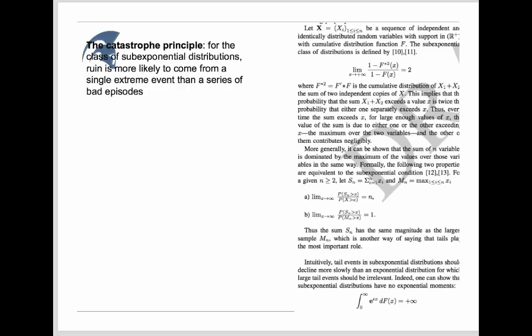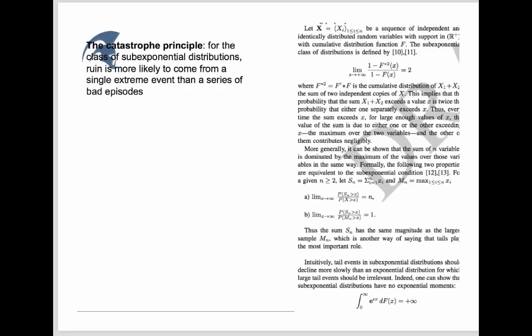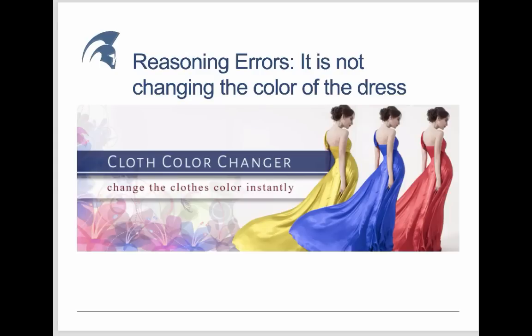So we start with the catastrophe principle. For the class of sub-exponential distribution, which is pretty much sub-exponential as a demarcation between thin tail and fat tail, for that class ruin is much more likely to come from a single extreme event than a series of bad episodes. Just like we saw here, you're much more likely to get your wealth from a single person than a collection of people. So that domain is actually quite vicious, because analyzing what's going on is not something that you can do casually. You cannot just compare two things.